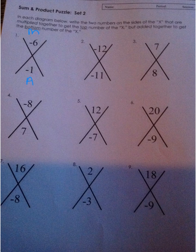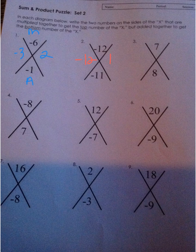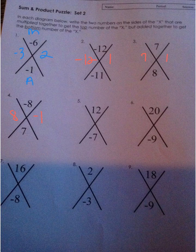What two numbers multiply to get me to negative 6 that add to get me to negative 1? Negative 3 and 2. What two numbers multiply to get me to negative 12 that add to get me to negative 11? Then: what two numbers multiply to get me to 7 that add to get me to 8? — 7 and 1. Then multiplying to get to negative 8, adding to get to 7: 8 and negative 1. Multiply to get to 12, add to get to negative 7: negative 4 and negative 3.